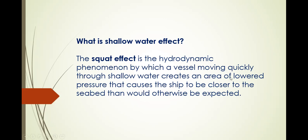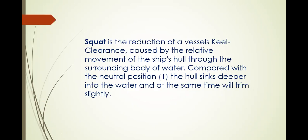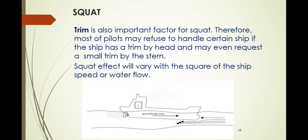Squat is the reduction of a vessel's keel clearance caused by the relative movement of the ship's hull through the surrounding body of water. Compared with the neutral position, the hull sinks deeper into the water and at the same time will trim slightly. Trim is the difference between the forward and aft drafts.